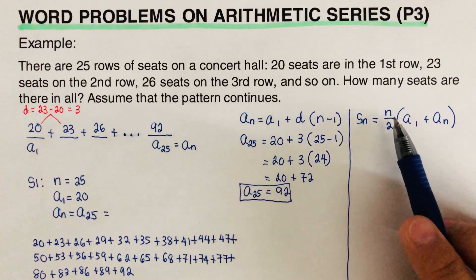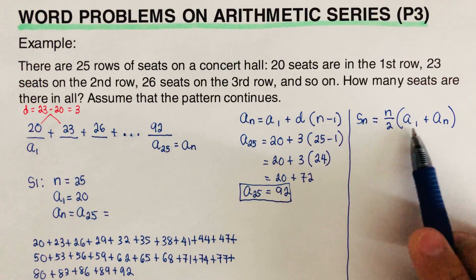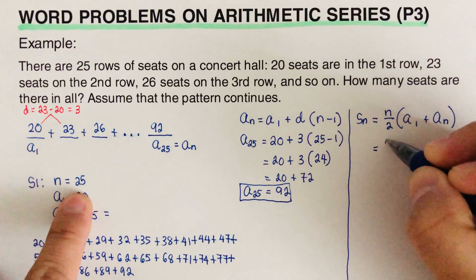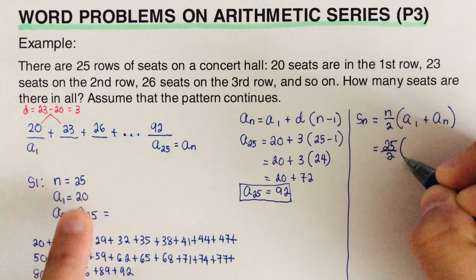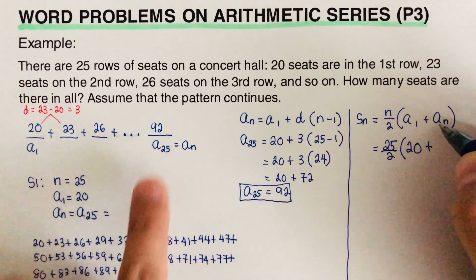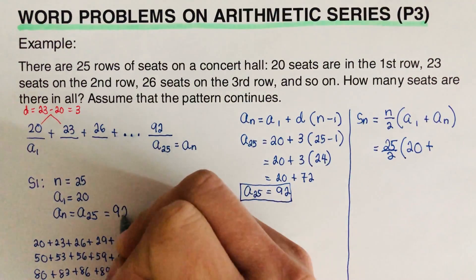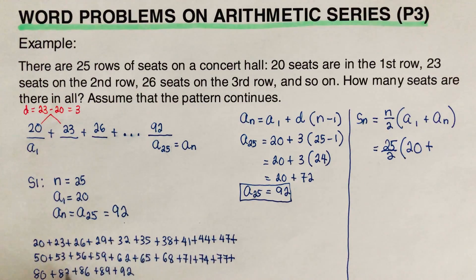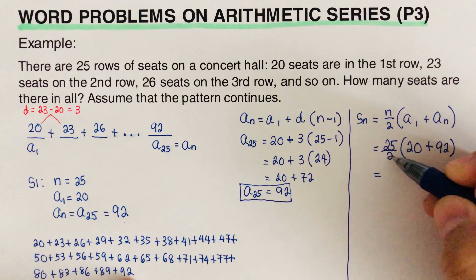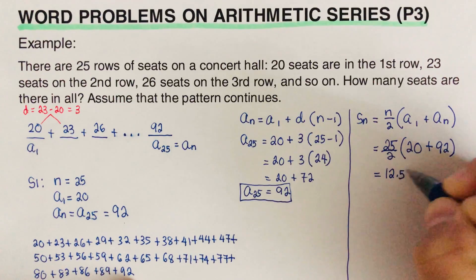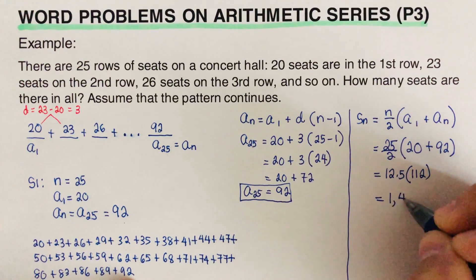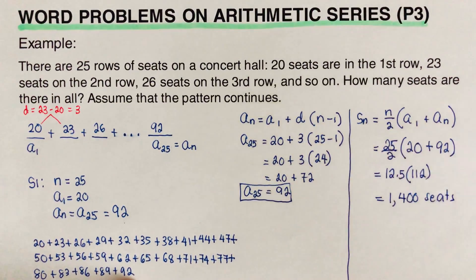The formula for the sum of an arithmetic series is S-sub-n = (n/2) × (a-sub-1 + a-sub-n). In this problem, n is 25, a-sub-1 is 20, and a-sub-n is 92. So we get S-sub-25 = (25/2) × (20 + 92) = 12.5 × 112 = 1400 seats.